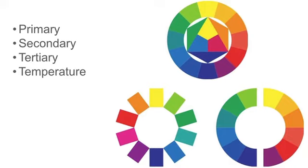There are three primary colors: red, blue, and yellow. One can mix all colors from these three primaries. Secondary colors are mixed from two primaries. The mixture of a secondary color and the adjacent primary creates a tertiary color.